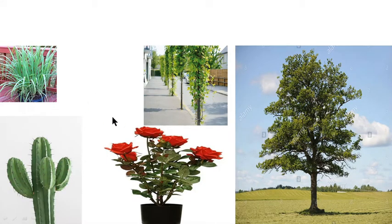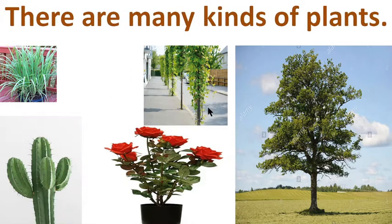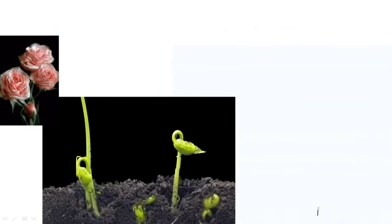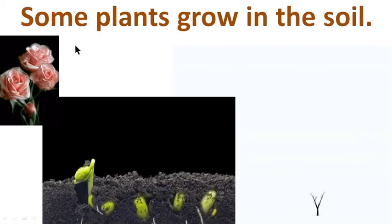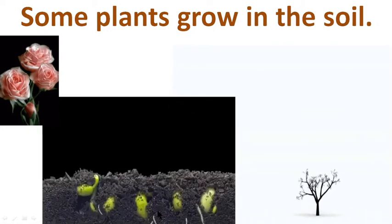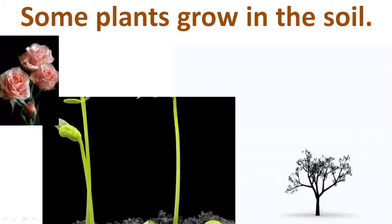In this picture, we can see many plants. There are many kinds of plants. Some plants are big, some plants are small, and some plants are very small. We can also see some plants grow in the soil.